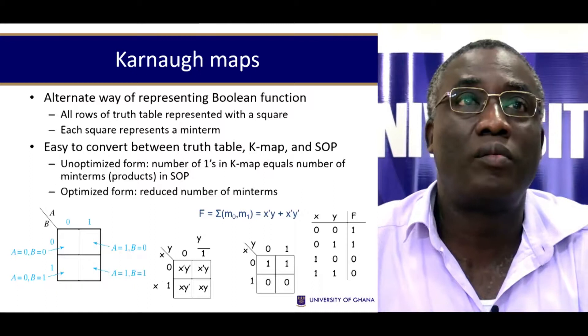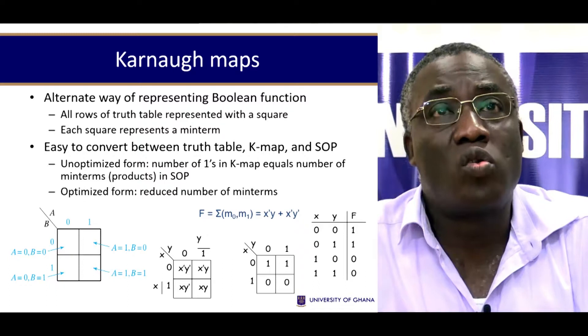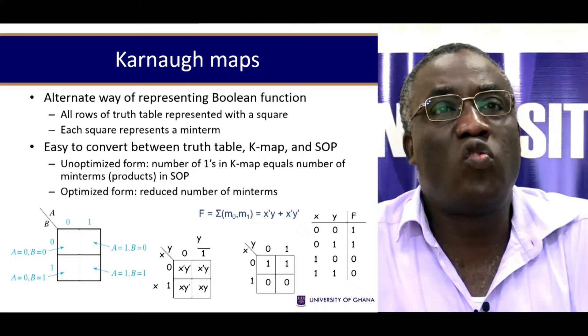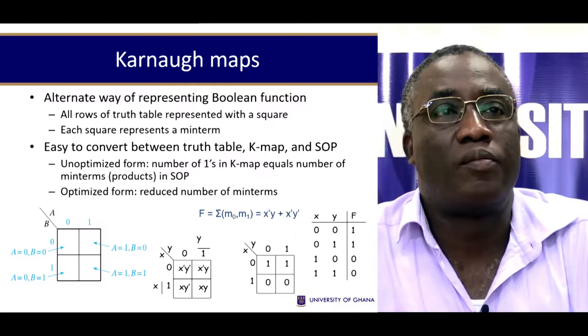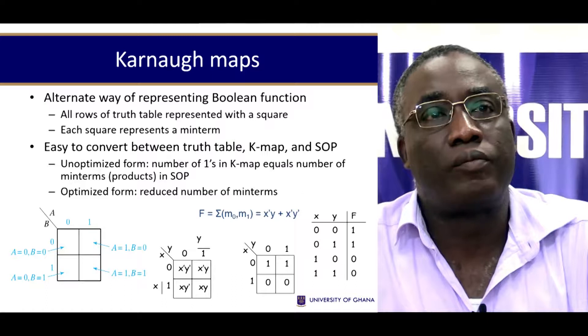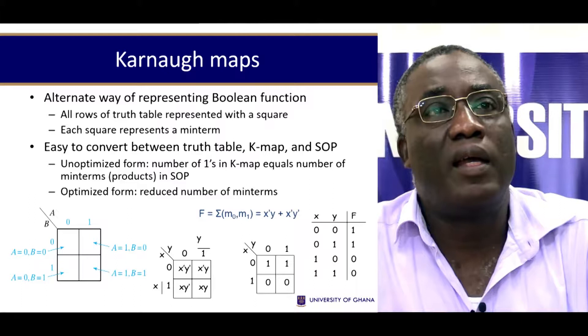So how do you go about it? You draw a table. All rows of a truth table, you convert them into a square. And each square will represent a function or a mean term. So for a two-variable function, a and b, you have four squares. Across here you have a, and down here you have b. So across here, this is zero, a is zero here, and a is one there. And down here, b is zero here, and b is one here.